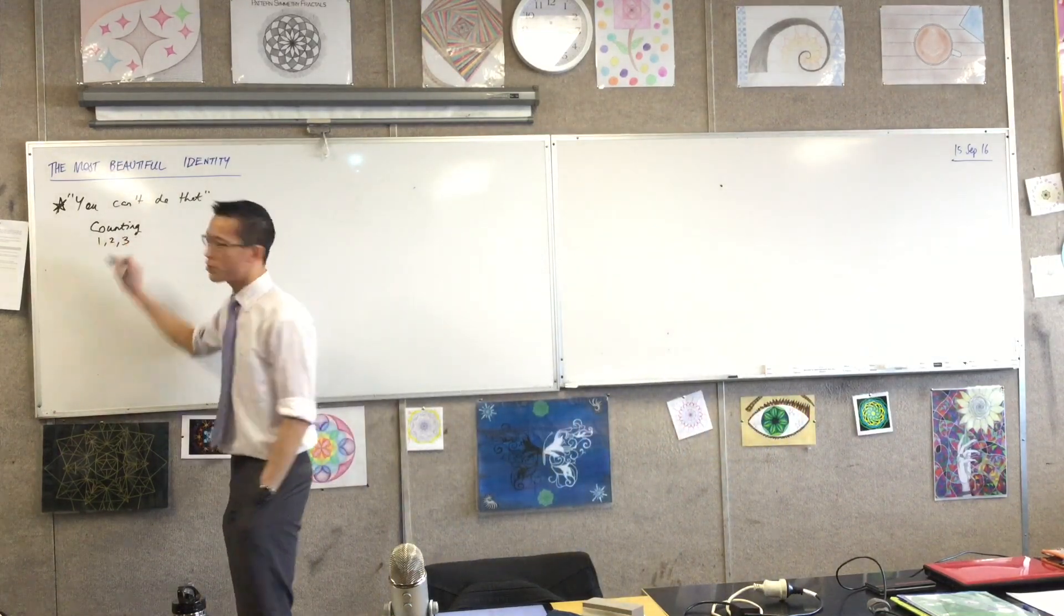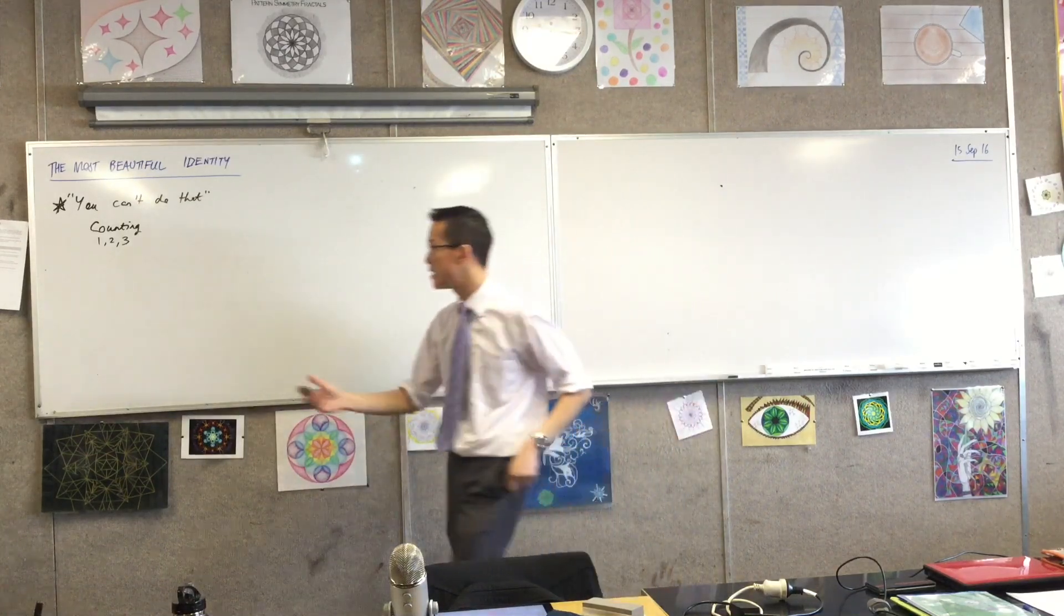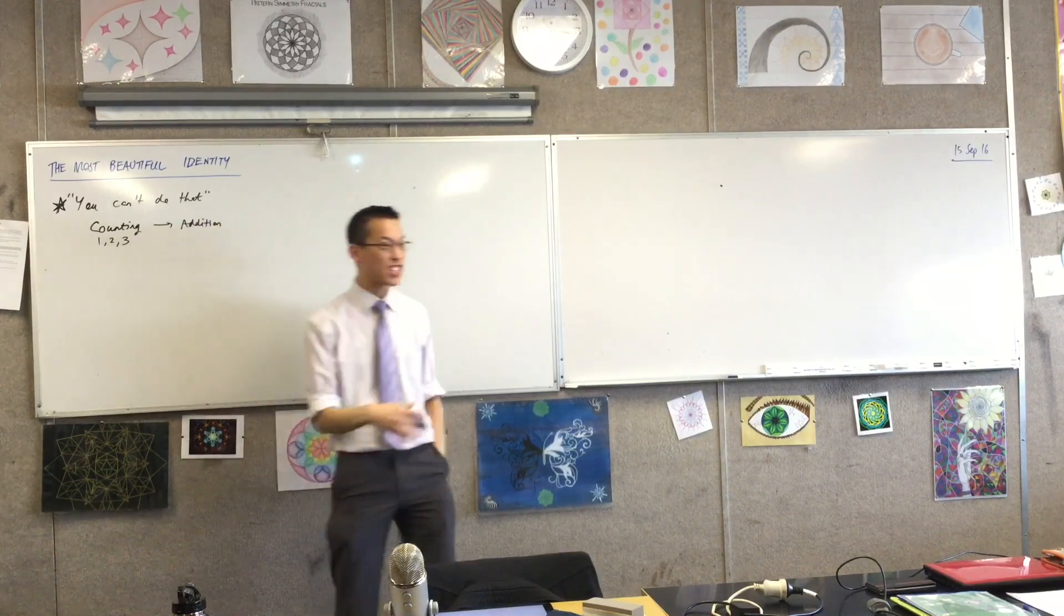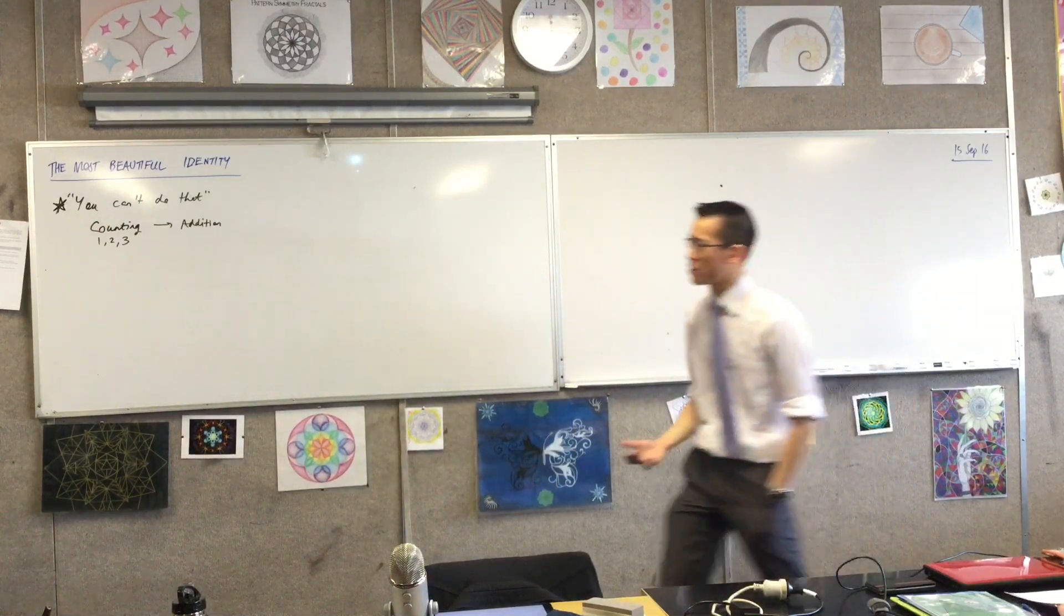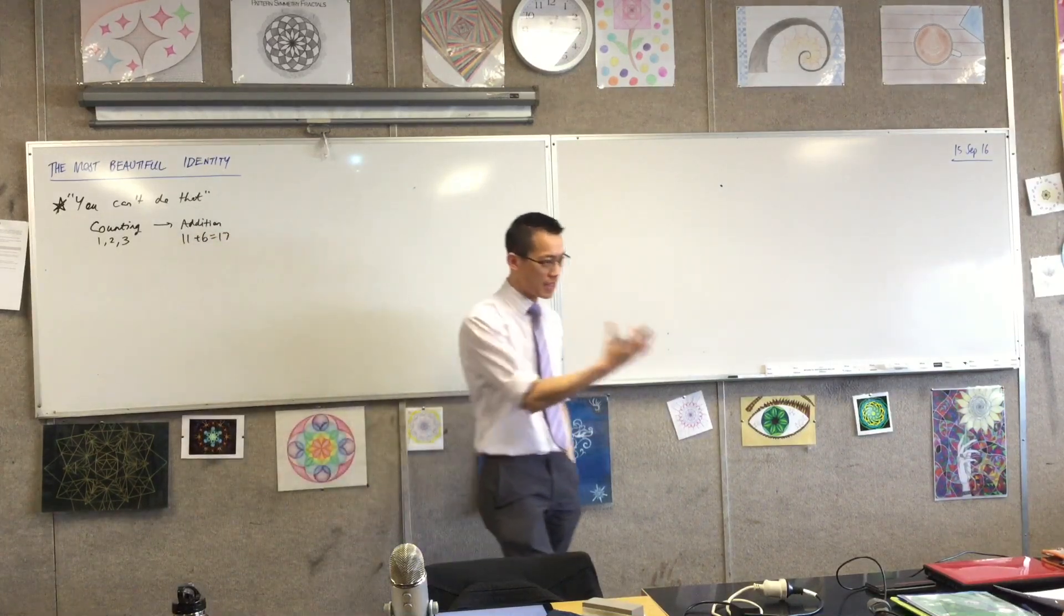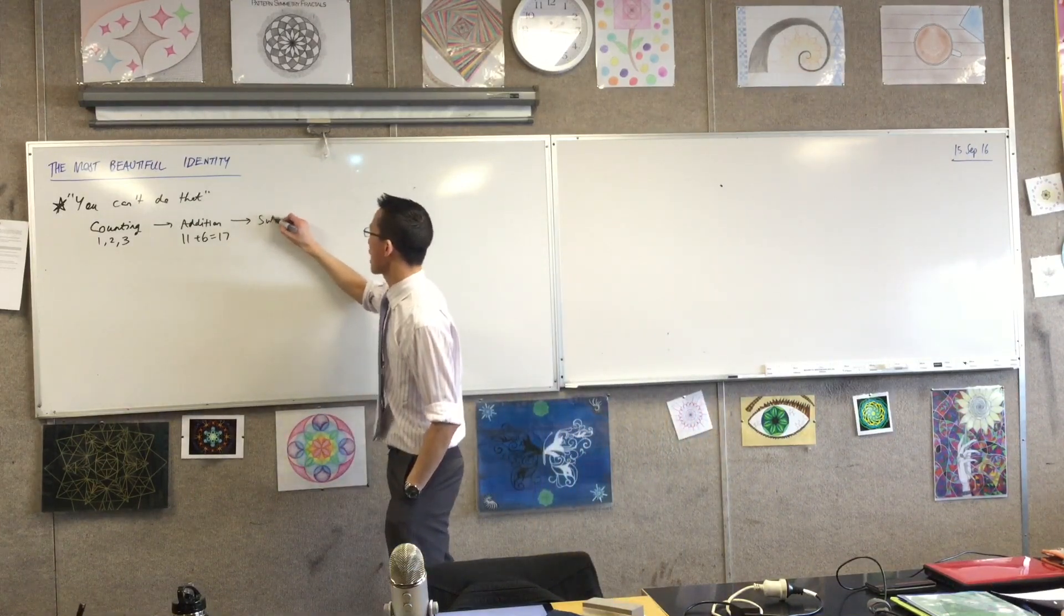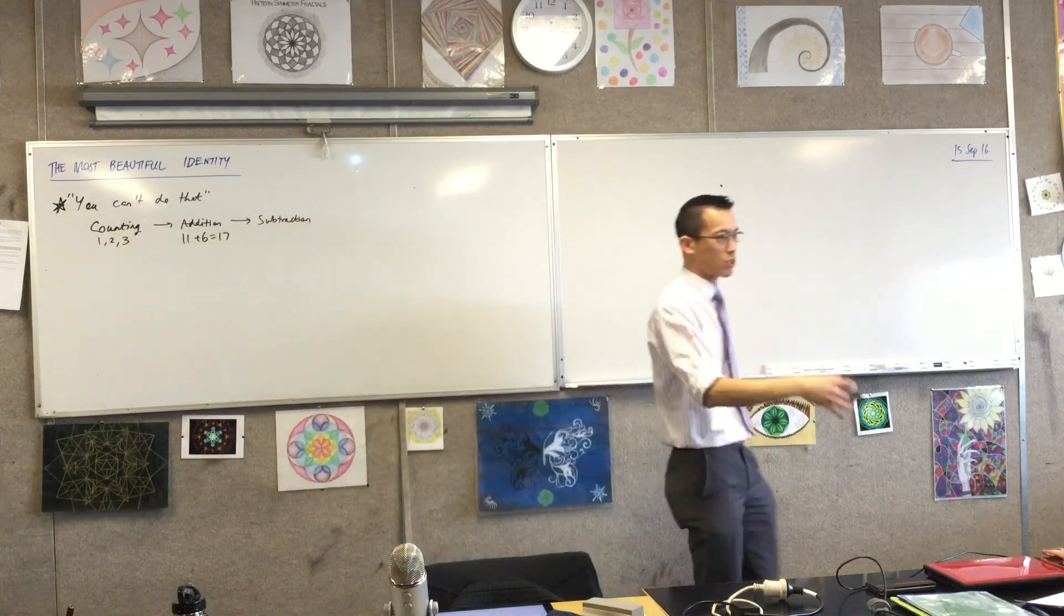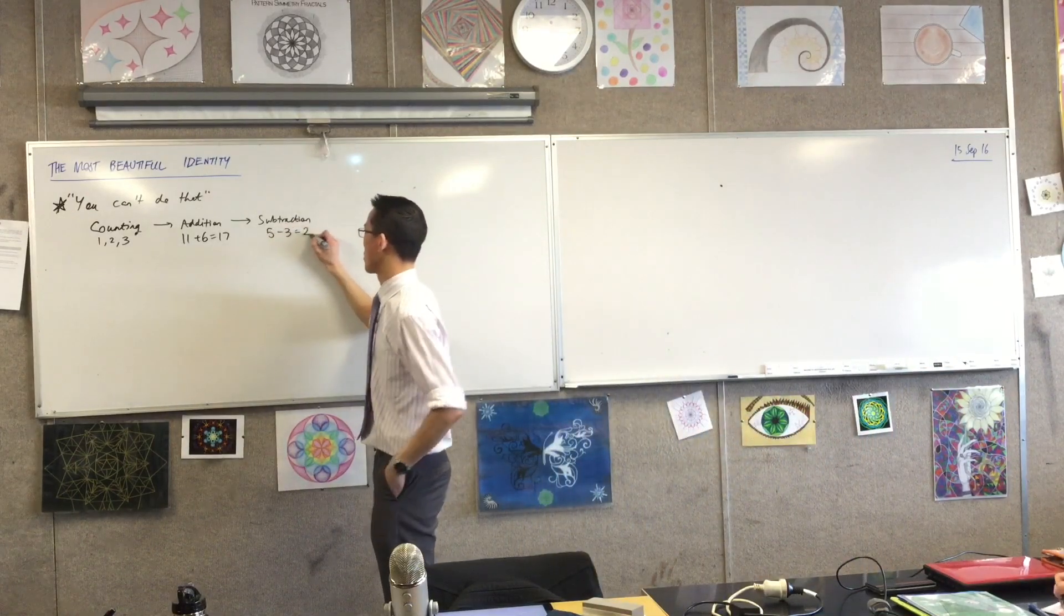Even very young children have this concept of counting, so it's fairly fundamental to the way we understand and interpret reality around us. But as soon as you develop counting, it's fairly intuitive to move on to addition. Addition begins as an extension of counting - plus one, plus one, plus one, and then you're like well why can't I add bigger numbers. We can write something like 11 plus 6 equals 17. And as soon as you have addition, you have subtraction. We can write 5 take away 3 equals 2.